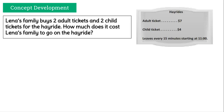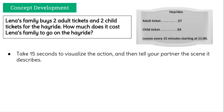Let's look at this first problem. Lena's family buys two adult tickets and two child tickets for the hayride. How much does it cost Lena's family to go on the hayride? I want you to take 15 seconds and visualize the action — actually picture what's happening here in your head. Once you've done that, tell your partner the scene it describes. Go ahead and pause the video until you've done this.